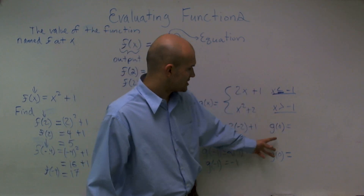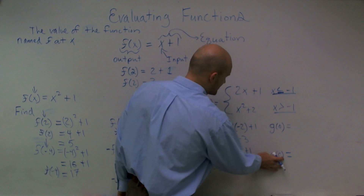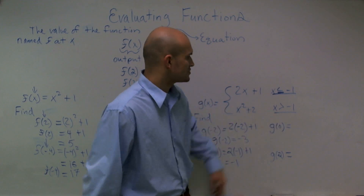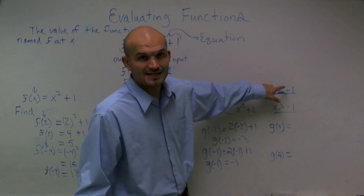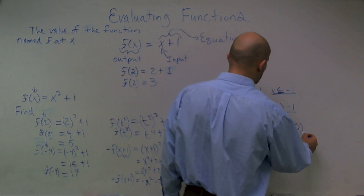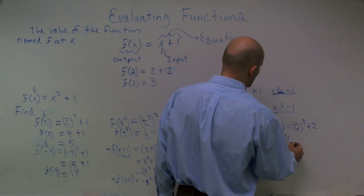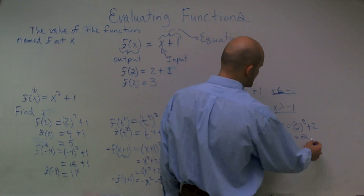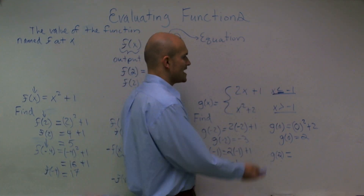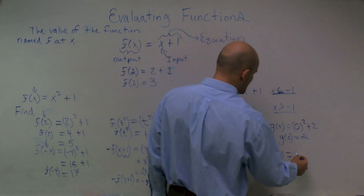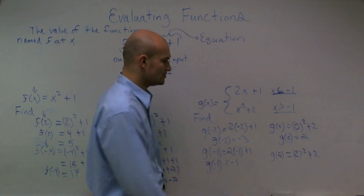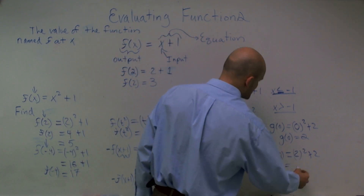For g of 0 — which function do I use? 0 is not less than or equal to negative 1, but 0 is greater than negative 1. So I'll have 0 squared plus 2. The value of my function g at 0 is equal to 2. For g of 2 — 2 is obviously greater than negative 1, not less than or equal to negative 1. So I say 2 squared plus 2. The value of my function g at 2 is equal to 4 plus 2, which is 6.